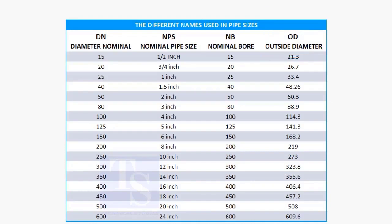In the case of nominal pipe size, the NPS and actual pipe OD are different up to 12 inches. Up to 12 inch pipes, you may need to memorize the actual OD size.